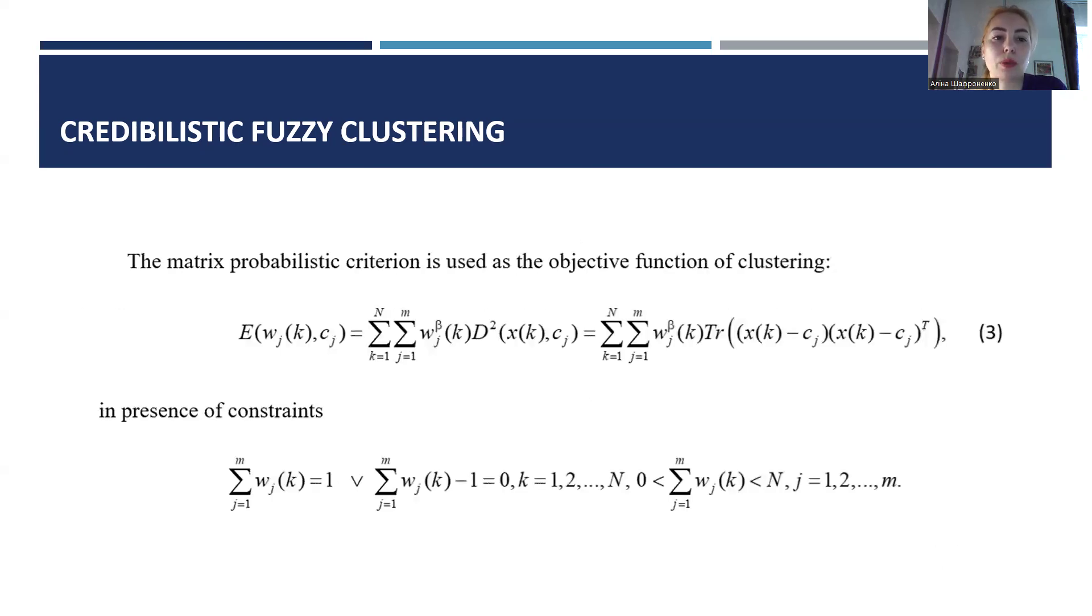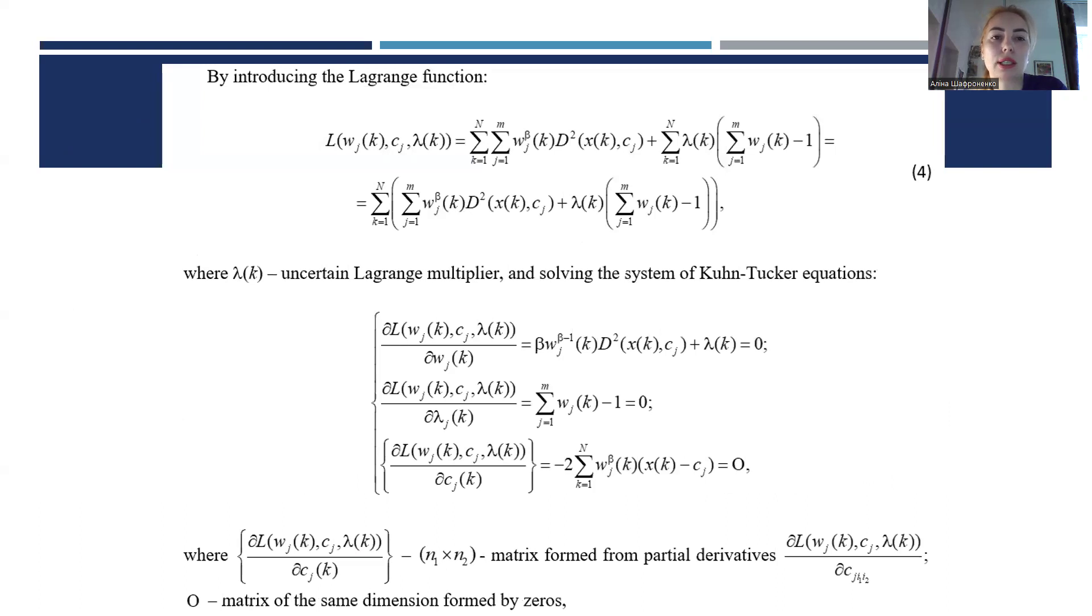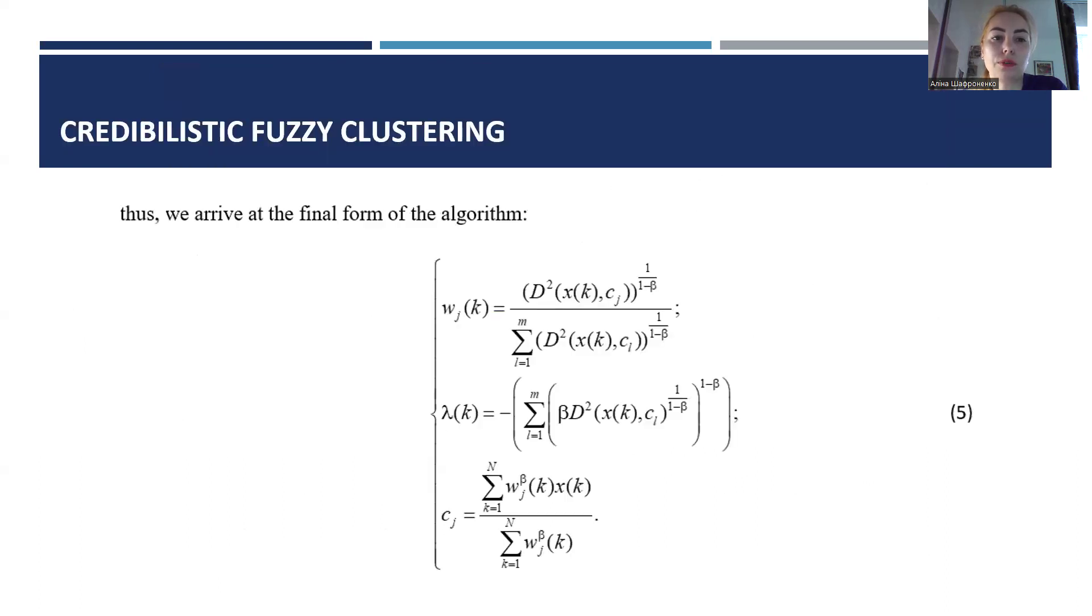The matrix probabilistic criterion is used as the objective function of clustering formula 3 with the present constraints next formulas. By introducing the Lagrangian function, first formula on the slide, where theta are certain Lagrangian multipliers, and solving the system of Kuhn-Tucker equations, we arrive at the final form of this algorithm formula 5.